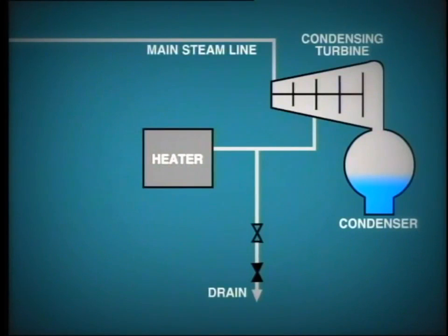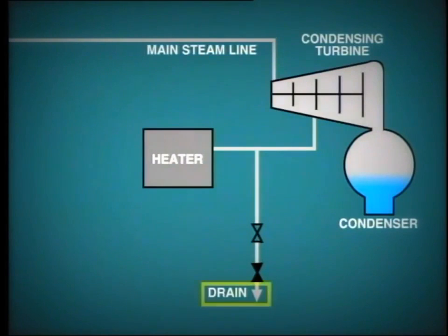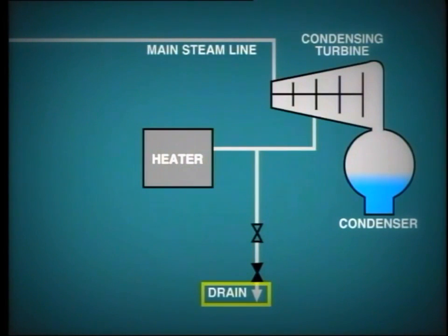Just as in the case of the main steam line, we must be careful to make sure that any condensate forming in the extraction lines will be removed via the drain connections which are fitted at the low points of the pipe run.